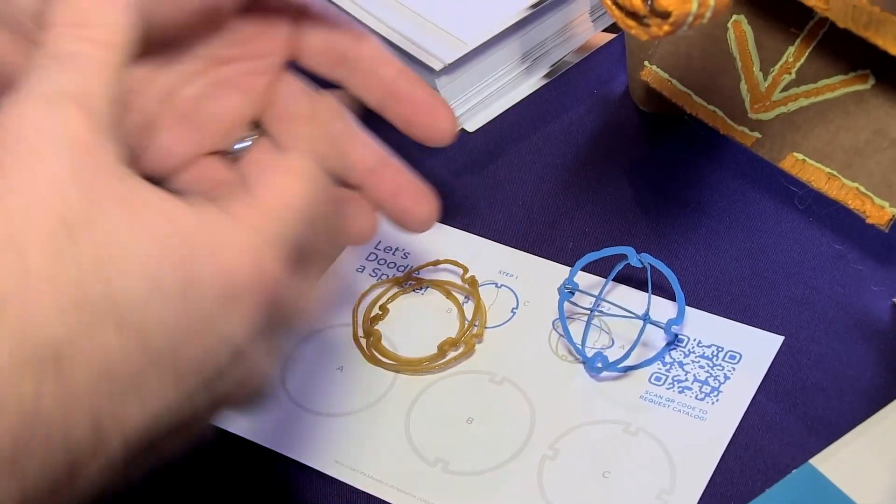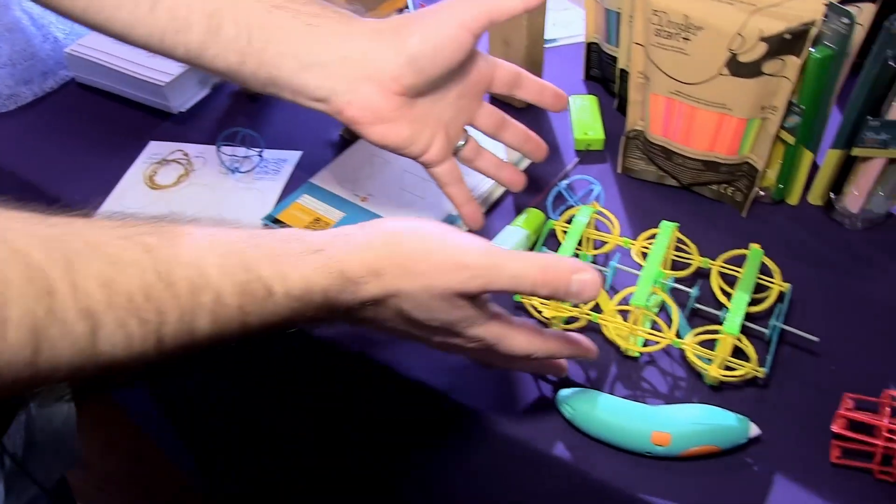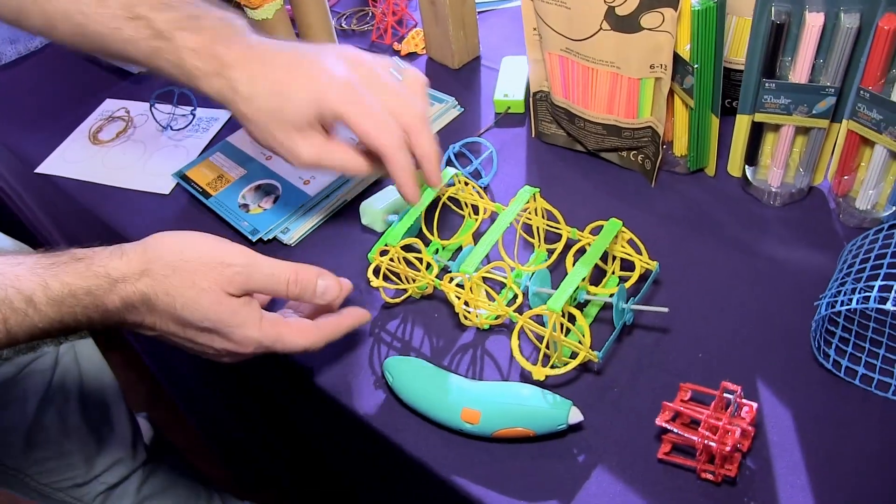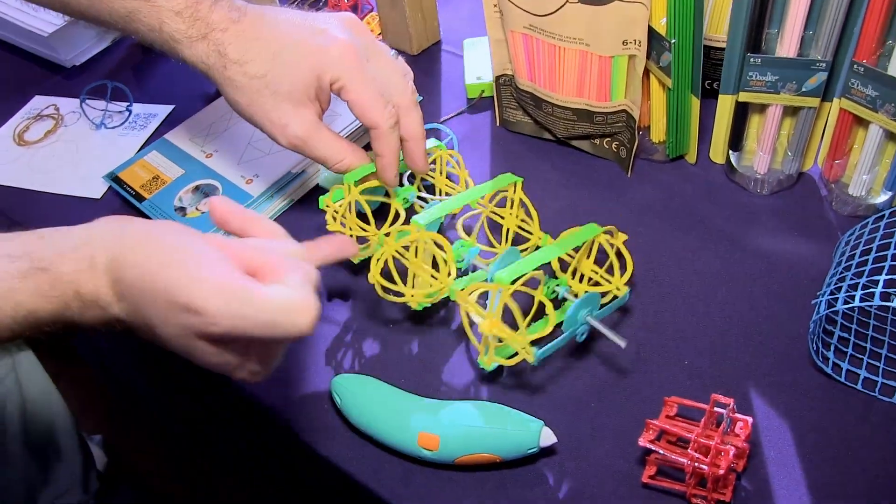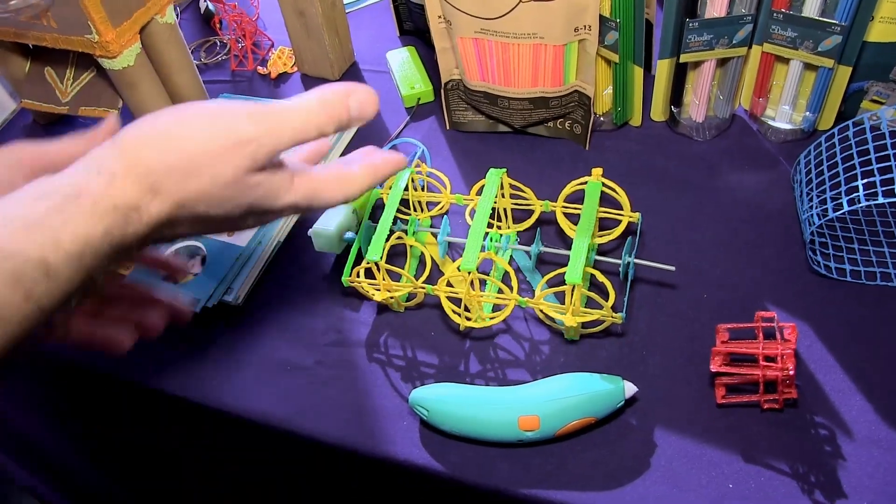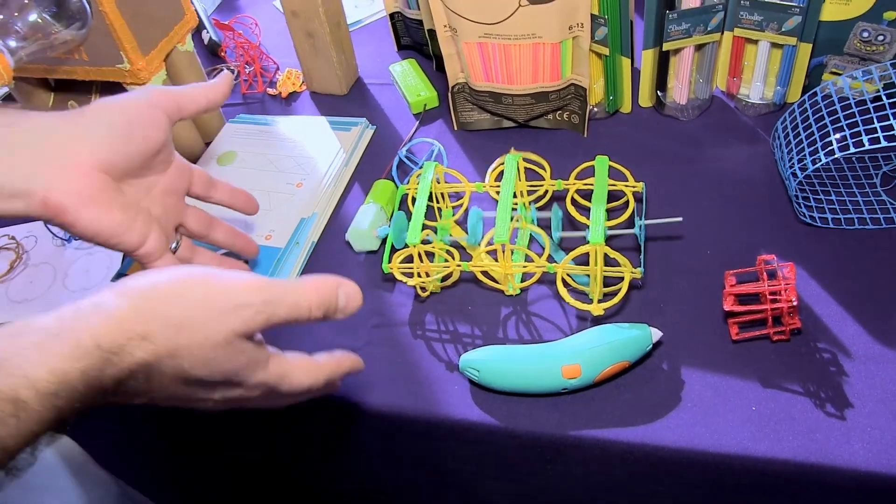You can take this method and go even further. Here, for example, I took that sphere method but left some openings and slits so that one of the pieces can come through. As a result, we were able to make a functional engine.